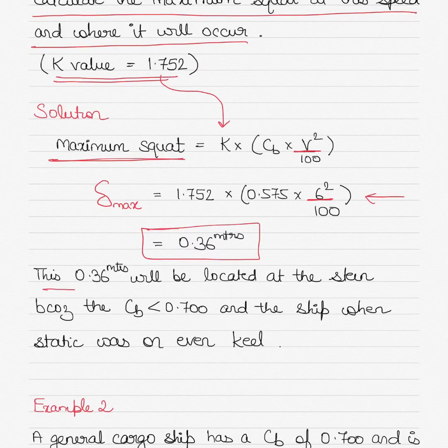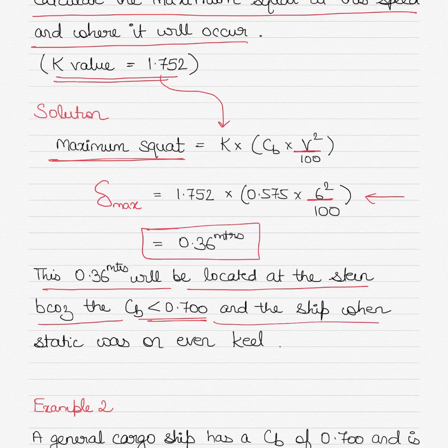Now this 0.36 meters of squat will be located at the stern of the container vessel because the block coefficient is less than 0.700 and the ship when static was also on even keel.